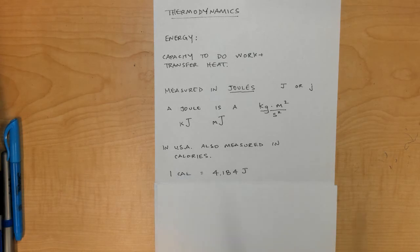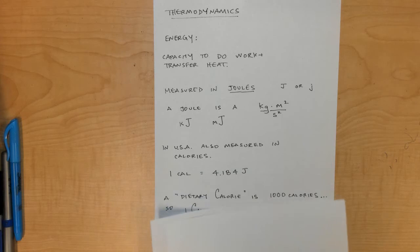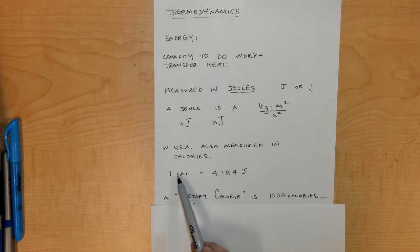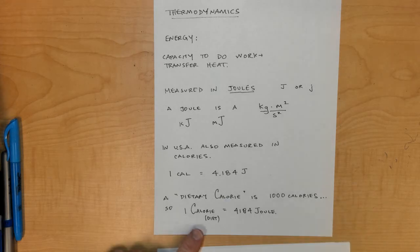In the dietary world, food calories are actually one thousand of these small c calories, and they're written with a capital letter C. A dietary calorie equals a thousand times 4.184, or 4,184 joules.